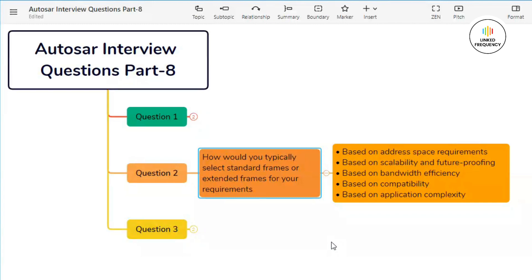Moving on to extended frames, opt for extended frames when the application demands larger address space to accommodate a vast number of nodes, message types, and unique identifiers. Extended frames provide a 29-bit identifier offering significantly more addressability compared to standard frames.